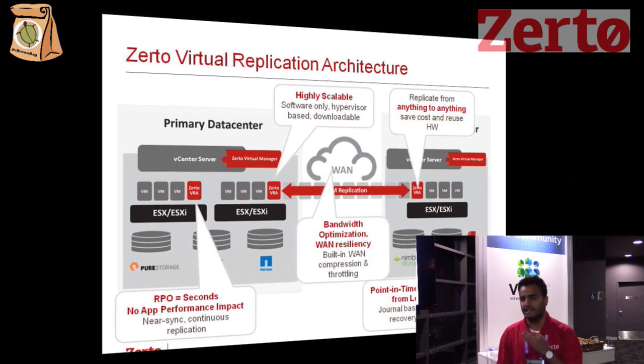Bandwidth can be a concern when talking about replication. Zerto has built-in bandwidth optimization and throttling tools, which means bandwidth is no longer a concern. Zerto has no strict bandwidth latency requirements — we can start replicating with something as small as 5 Megabits. If you use appliances like Silver Peak or Riverbed, Zerto works great with them. And if you don't, Zerto's built-in compression tools work very well as well.